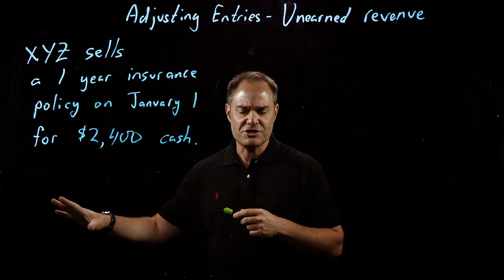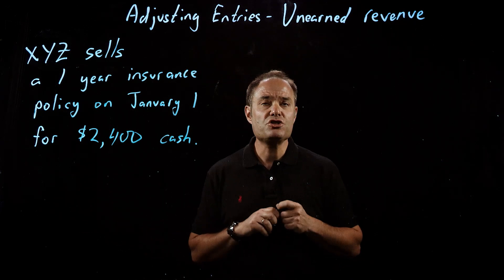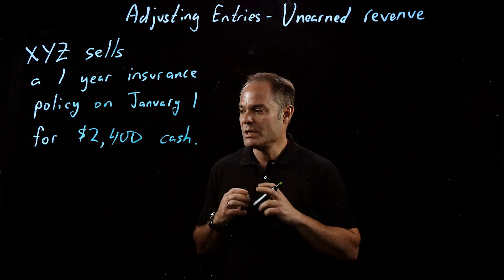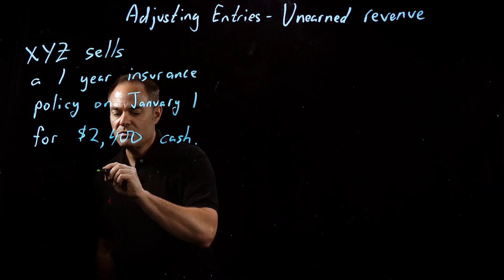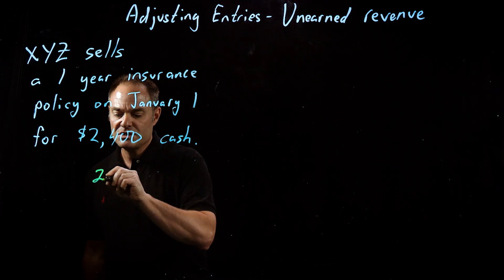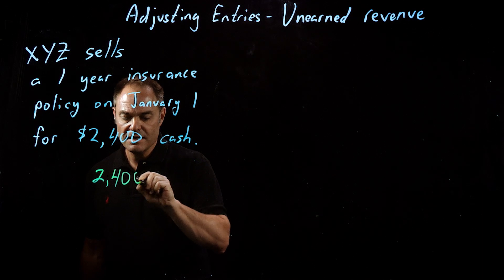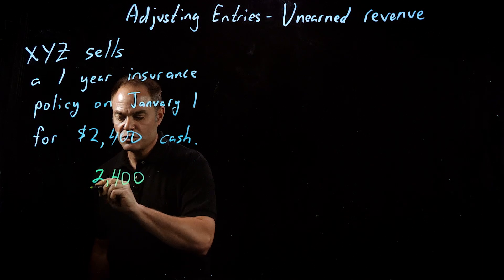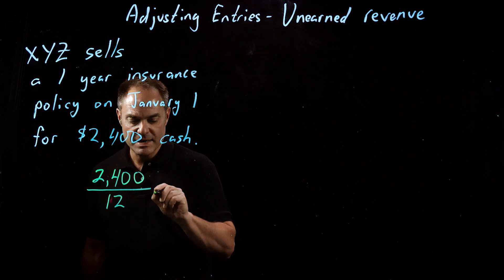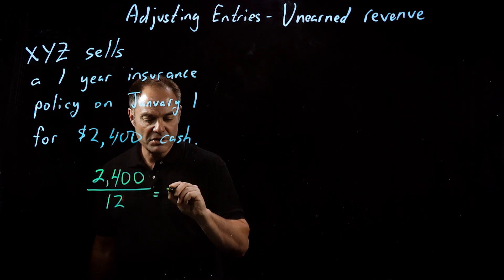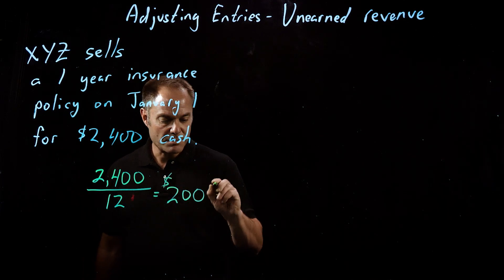We're not going to do cash accounting anymore — let's jump right into accrual accounting. Since it's a 12-month policy worth $2,400, divided by 12 months, the policy is worth $200 per month.